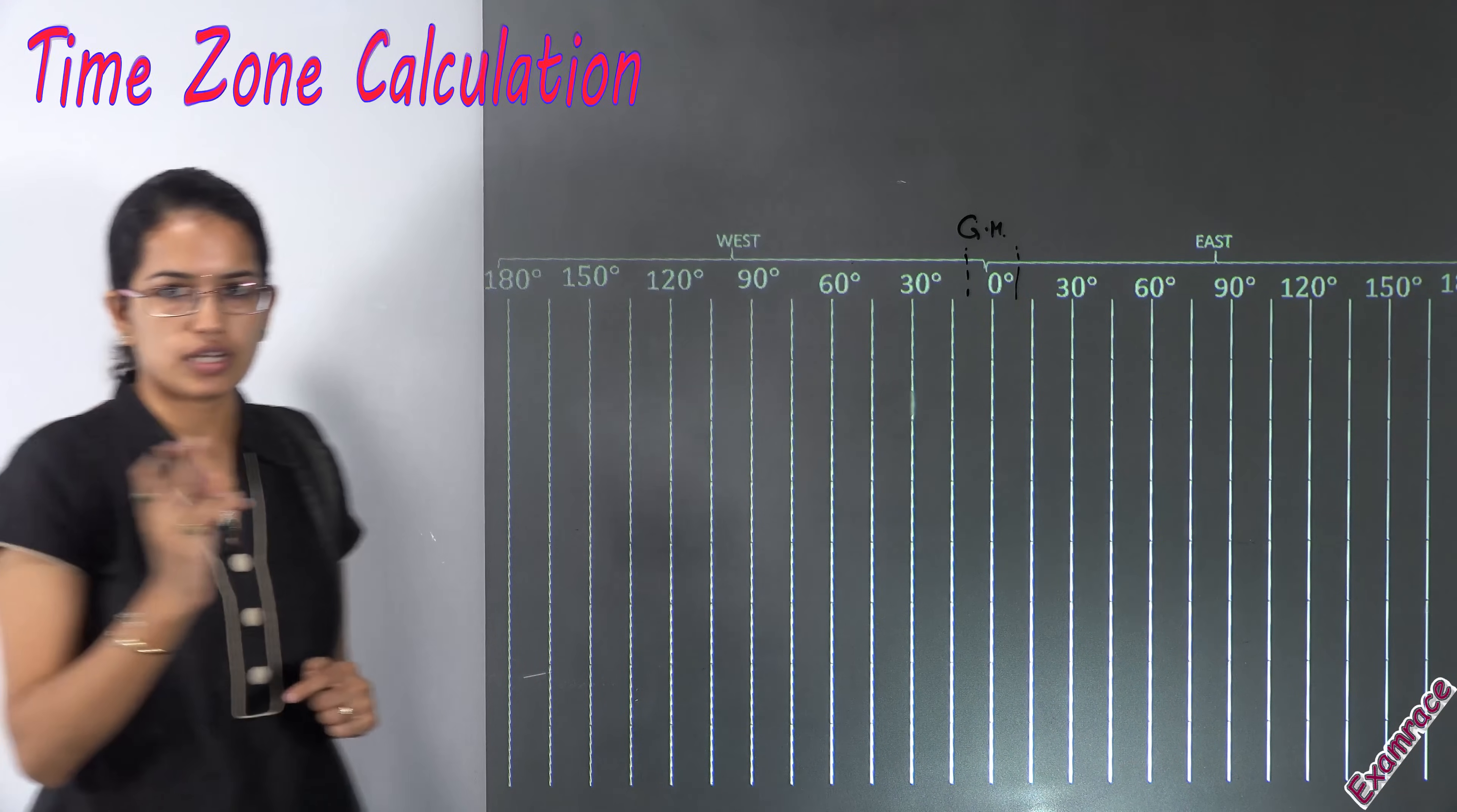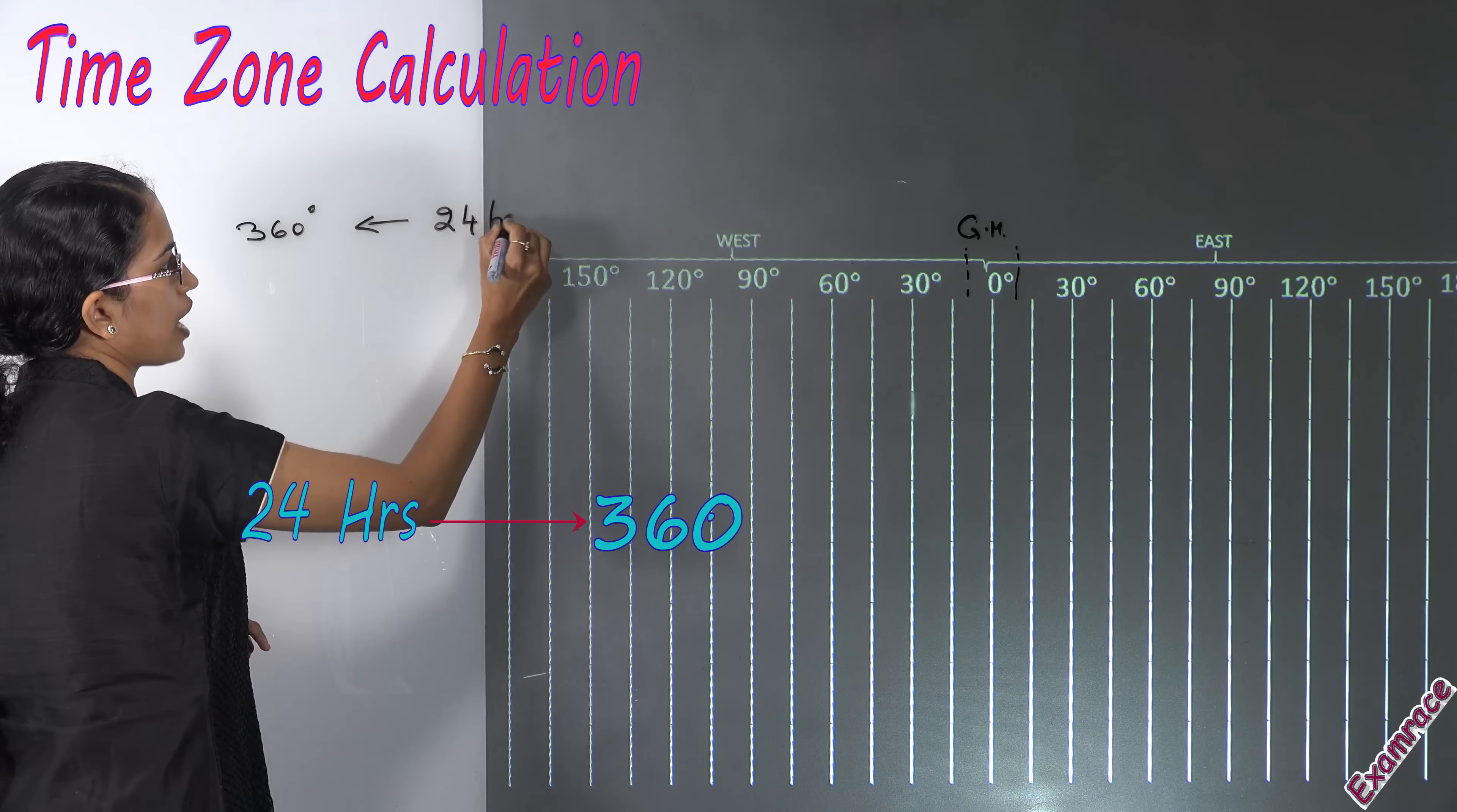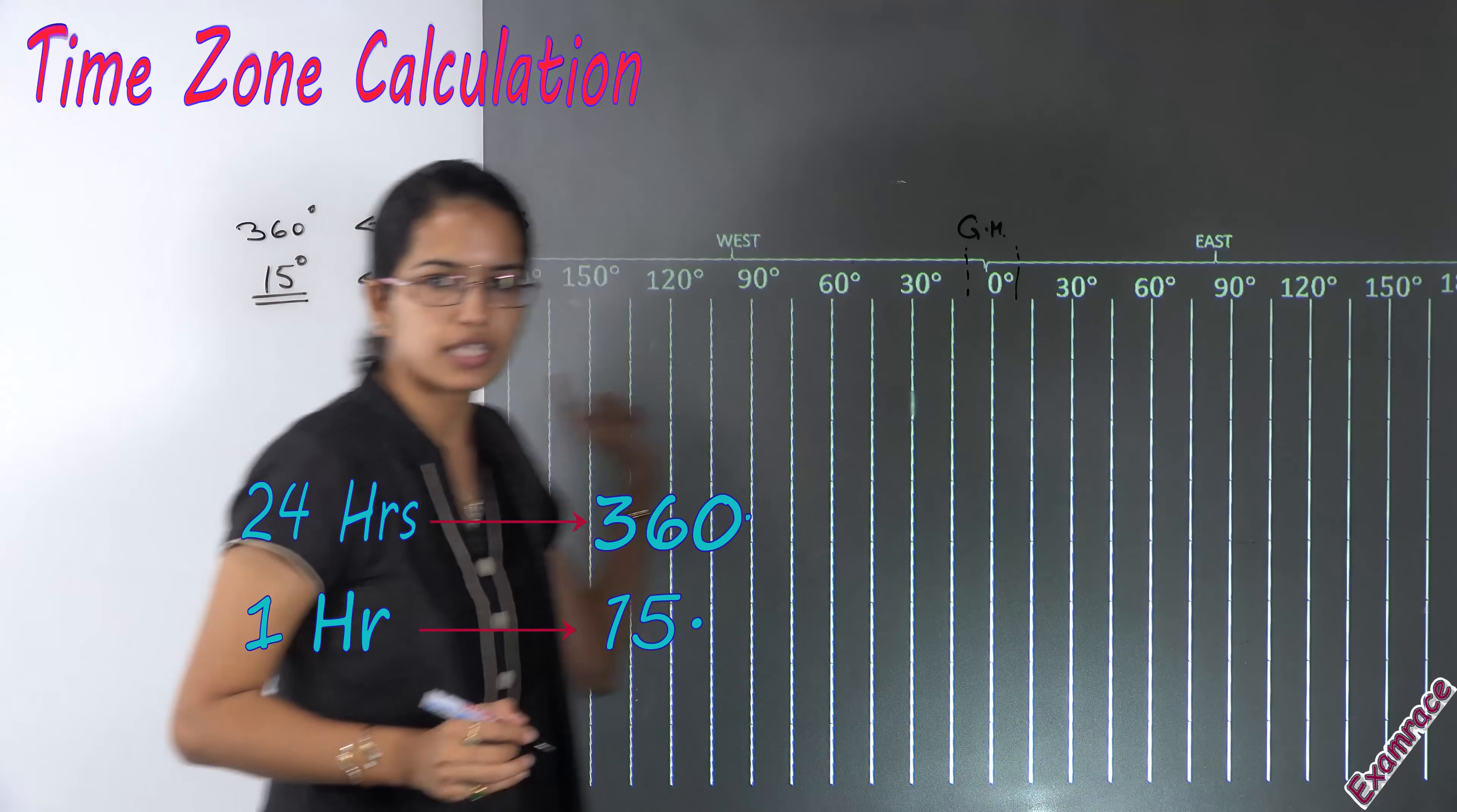So when we talk about Earth, Earth rotates on its axis which is known as rotation and that takes place in 24 hours. So this 360 degrees is completed in 24 hours. That means in 1 hour we move 15 degrees. And that's how we have drawn this diagram.